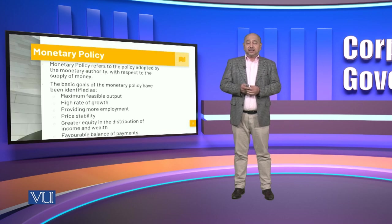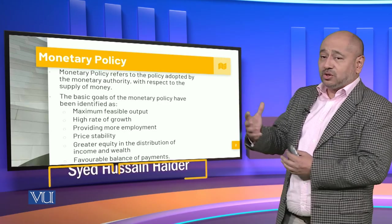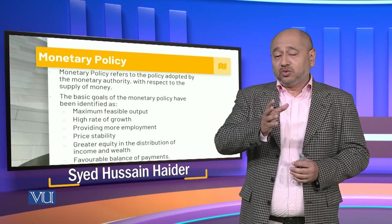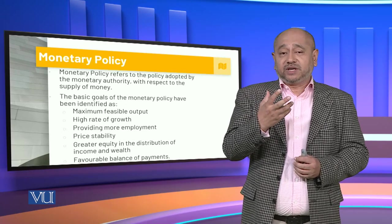When we are talking about economic policy, the basic goals of the monetary policy are maximum feasible output — increasing the output of our products, our industries, our different sectors — and a high rate of growth. We talked about this in the economic policy: trying to reach a double-figure growth rate so that there is more employment. Other goals include price stability, which requires control on inflation, a greater equity in the distribution of income and wealth, and a favorable balance of payments.